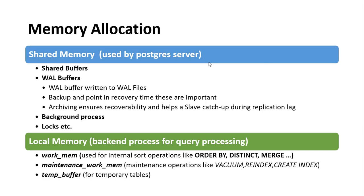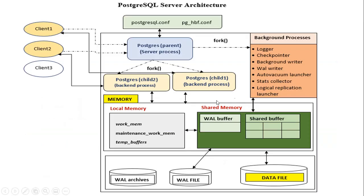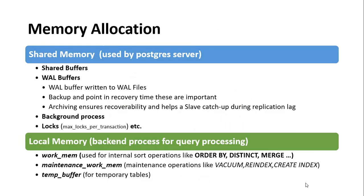WAL buffers are the transactional log buffers of PostgreSQL. Any changes made to the data get written to the WAL buffer, and the WAL writer writes these changes to the WAL files once they are committed. These files are very useful for backups and point-in-time recovery. Background processes also get memory allocated from the shared memory.